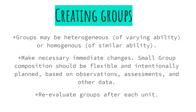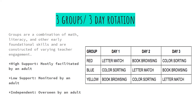One confusing aspect of small groups is that a new rotation doesn't always start on Monday. It doesn't necessarily run Monday-Tuesday-Wednesday. With snow days, special events, or schedule changes, it's simply whatever the next three available days are — Tuesday-Wednesday-Friday, or Thursday-Friday-Monday. Don't attach day one to a specific day of the week; just focus on making sure each group engages in each small group activity before introducing a new set.